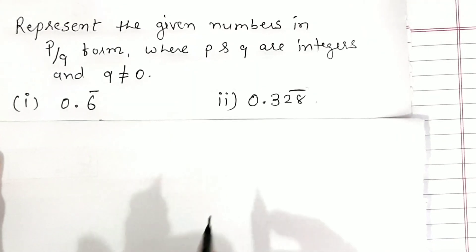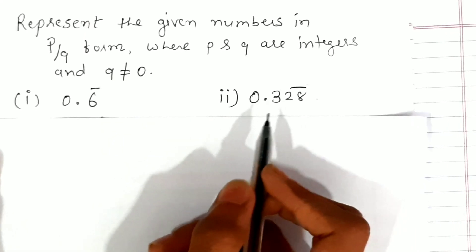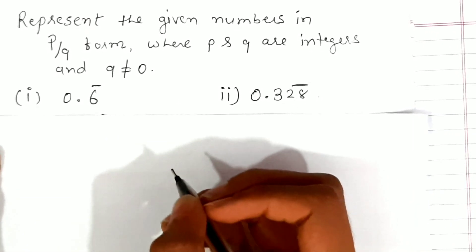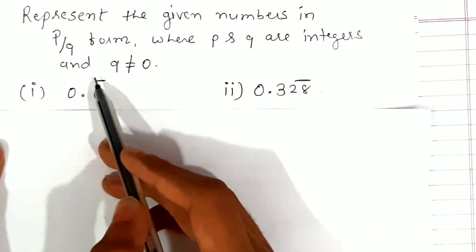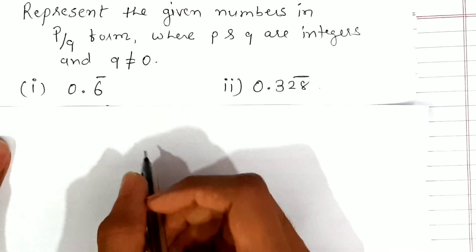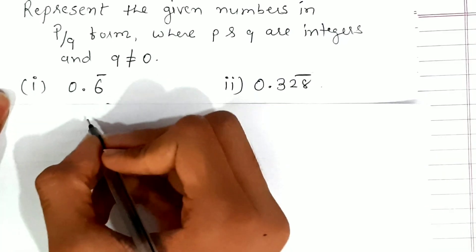Hey guys, today I'm going to teach you how to represent given numbers like 0.6̄ and 0.3̄2̄8̄ in p/q form, that is in fraction form, where p and q are integers and q ≠ 0. Let's get right into it.